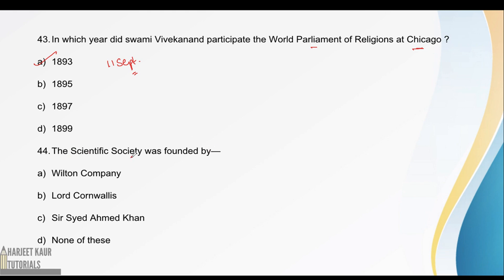Next: the Scientific Society was founded by Sir Syed Ahmed Khan. Where did he found it? He founded it in Aligarh. Their aim was to translate works into vernacular language — meaning local language — and to promote Western education among the community.